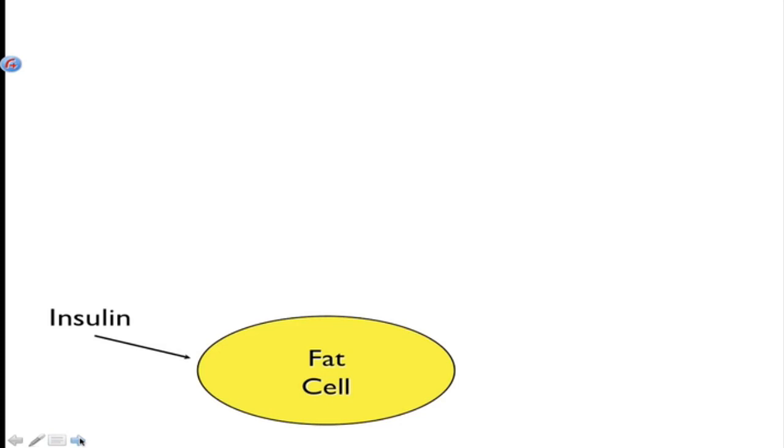And let's talk about weight gain first. Too much insulin leads to production of leptin, right? And leptin speaks to the brain and decreases hunger.